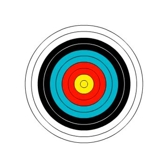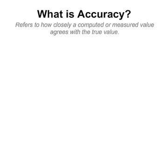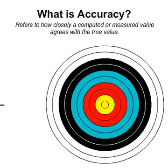Accuracy and precision can be illustrated graphically using the analogy from target practice. The arrow holes on the target can be thought of as measurements or predictions of a numerical technique, whereas the bull's eye represents the actual or true value. Accuracy refers to how closely a computed or measured value agrees with the true value. Arrows that strike closer to the bull's eye are considered more accurate.